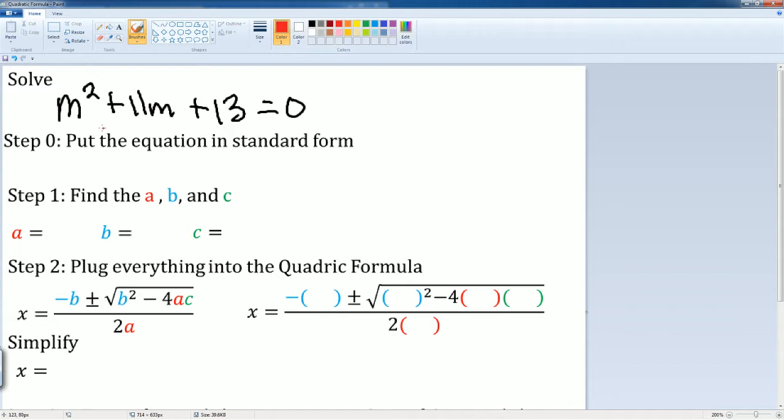So let's find the a, b, and c. The a is the number in front, which is just one. The b is going to be the 11, and the c is going to be the 13.